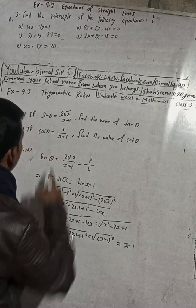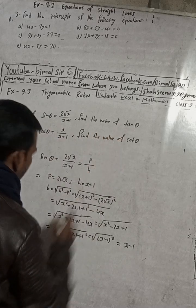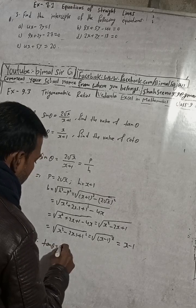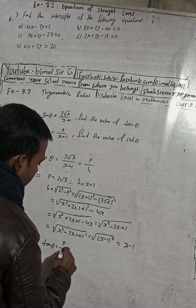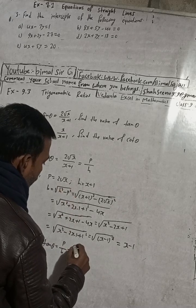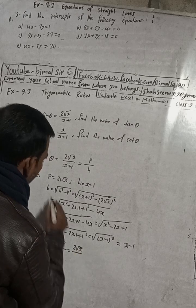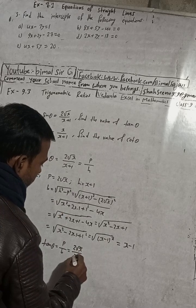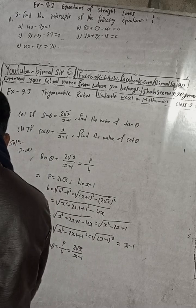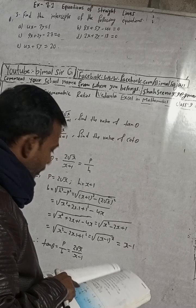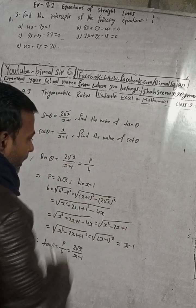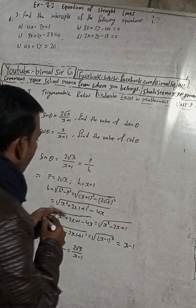Therefore, tan theta is equal to P by B. P by B means P equals 2 root x, and B value is x. The answer in the book is 2 root x divided by x.